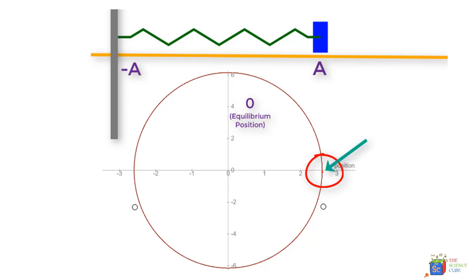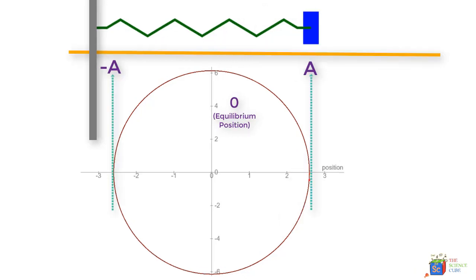So when the mass is at extreme right position, the dot is at this position. As the mass starts moving to the left, the dot which represents the mass starts moving in a circle. You see both the mass and the dot on the circle have started moving. Let us watch this mass complete one cycle and see what angle the dot covers.